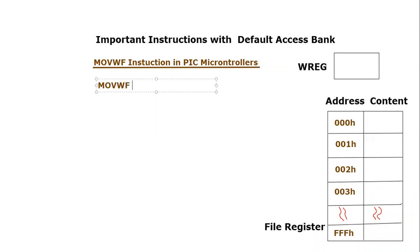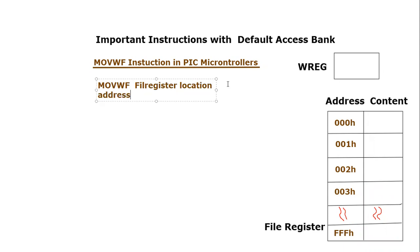This will be the mnemonic of this instruction. Now let's talk about its format. The format is: first you write MOVWF, which is the keyword, and then you have to mention a file register location address — a single location of the file register will be addressed here.